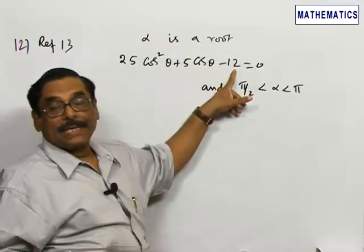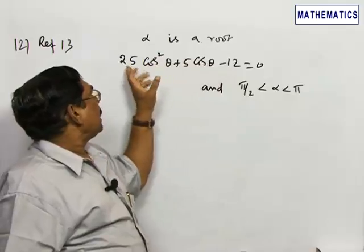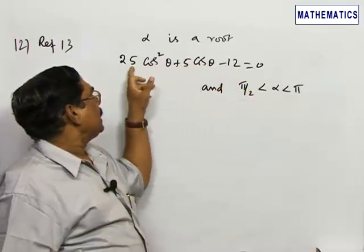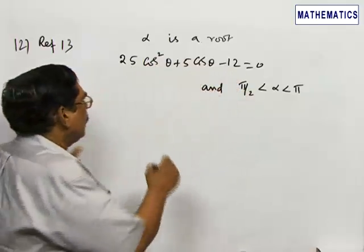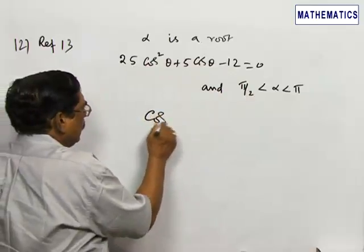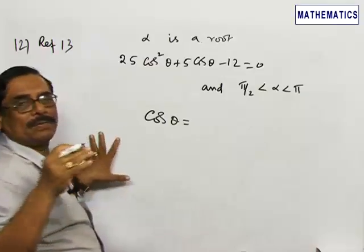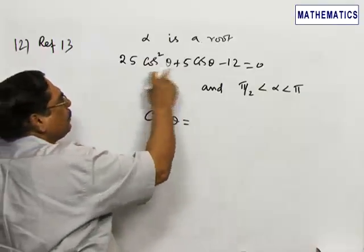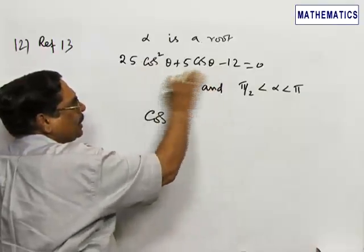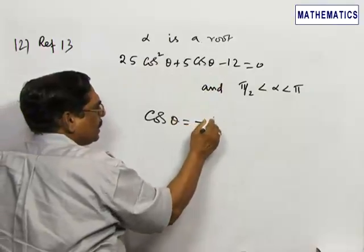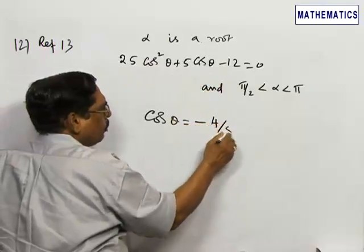Consider this as a quadratic equation in cos theta. Then cos theta will be, using the quadratic formula, minus B plus or minus root of B squared minus 4AC by 2A. It will simplify to minus 4 by 5 after all these simplifications.